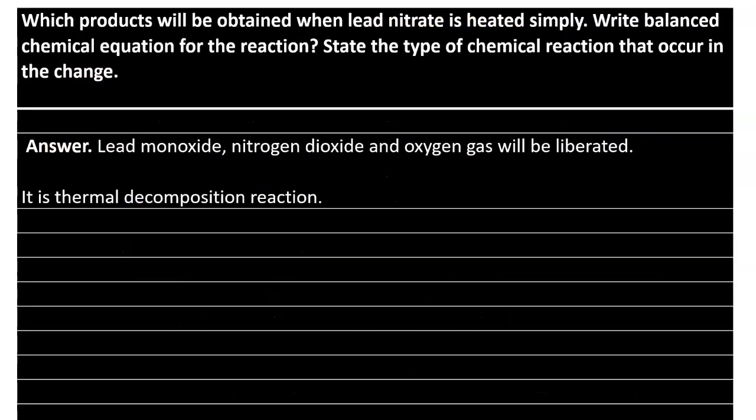The next question asks: what products are obtained when lead nitrate is heated? Write the balanced chemical equation and state the type of reaction. When lead nitrate is heated strongly, we get lead monoxide (PbO), nitrogen dioxide (NO2), and oxygen gas (O2).